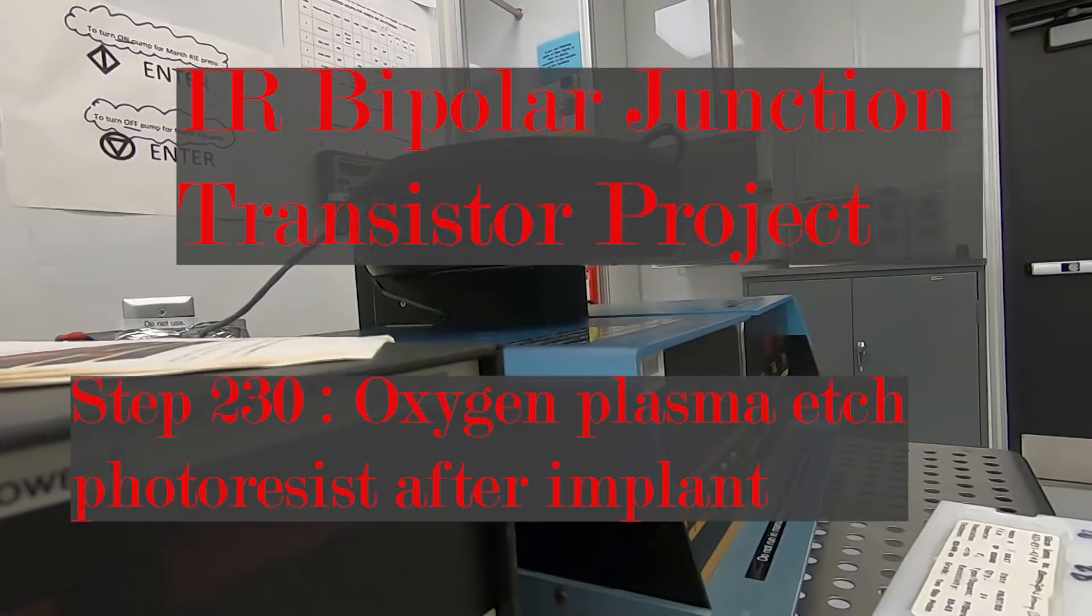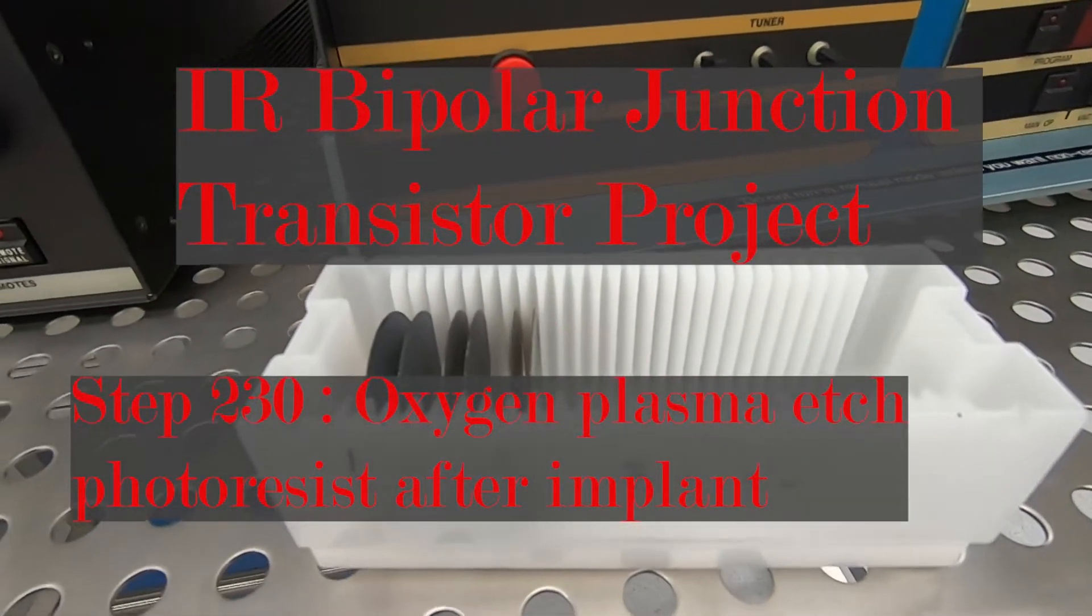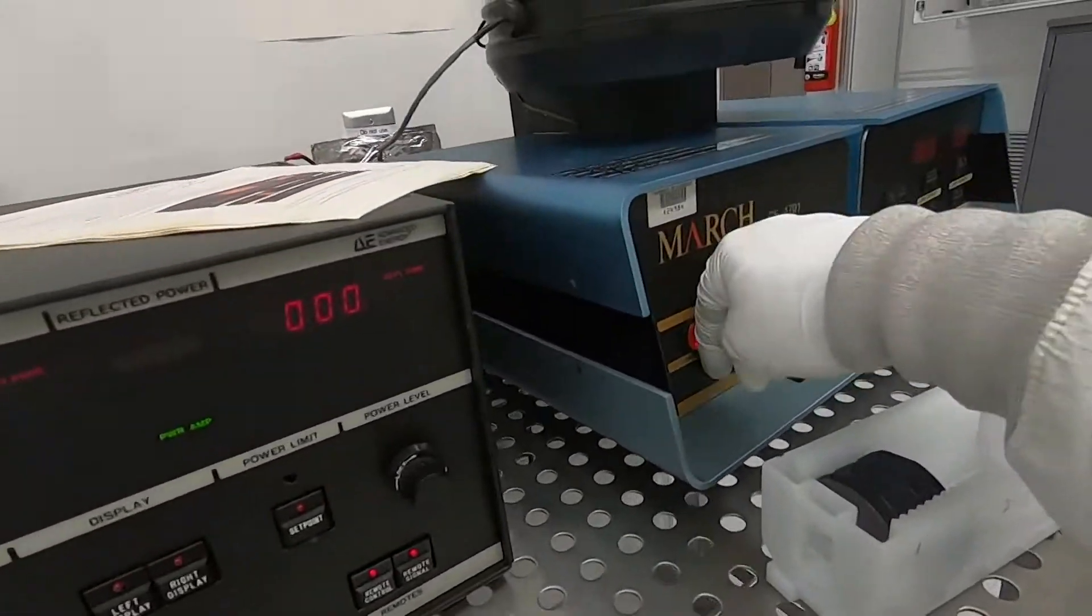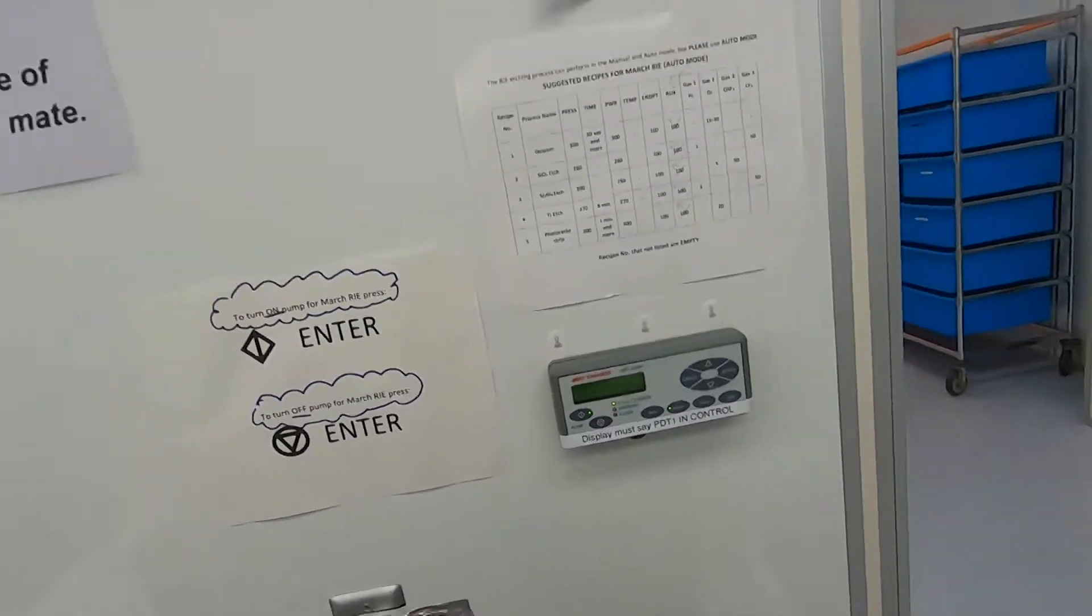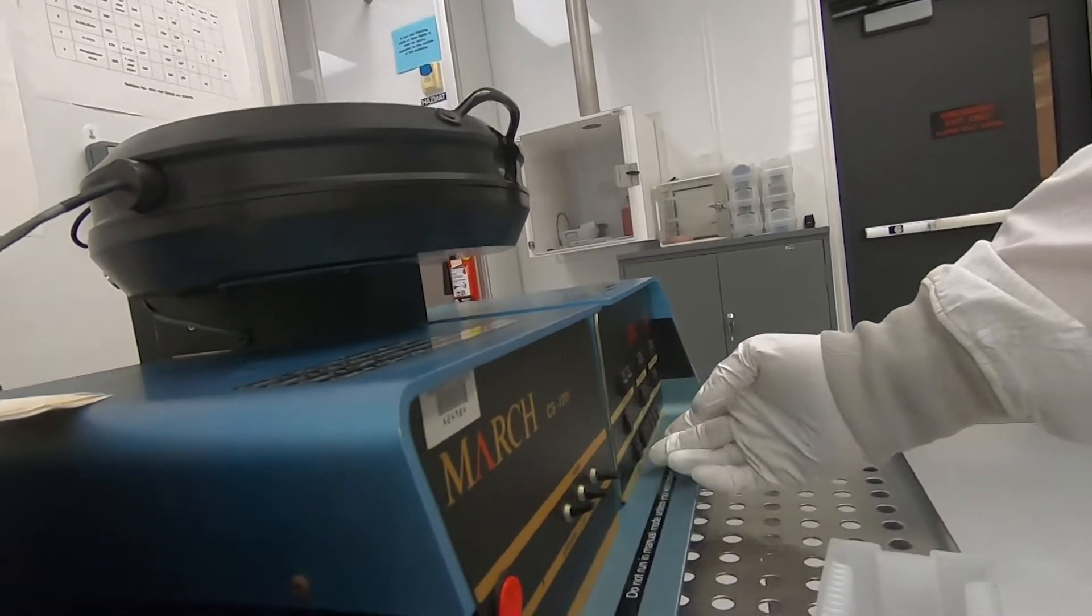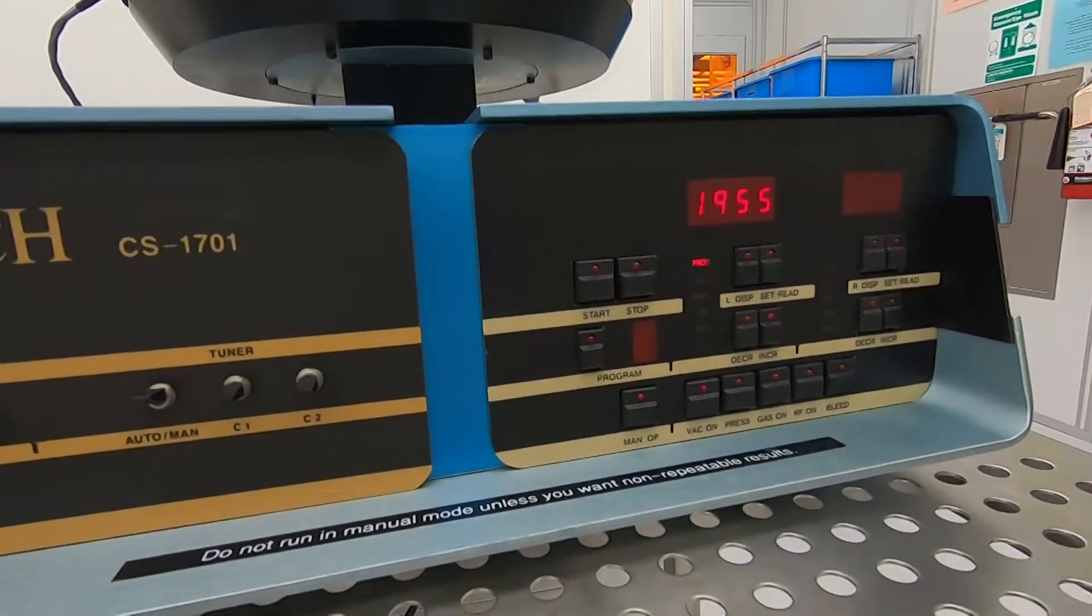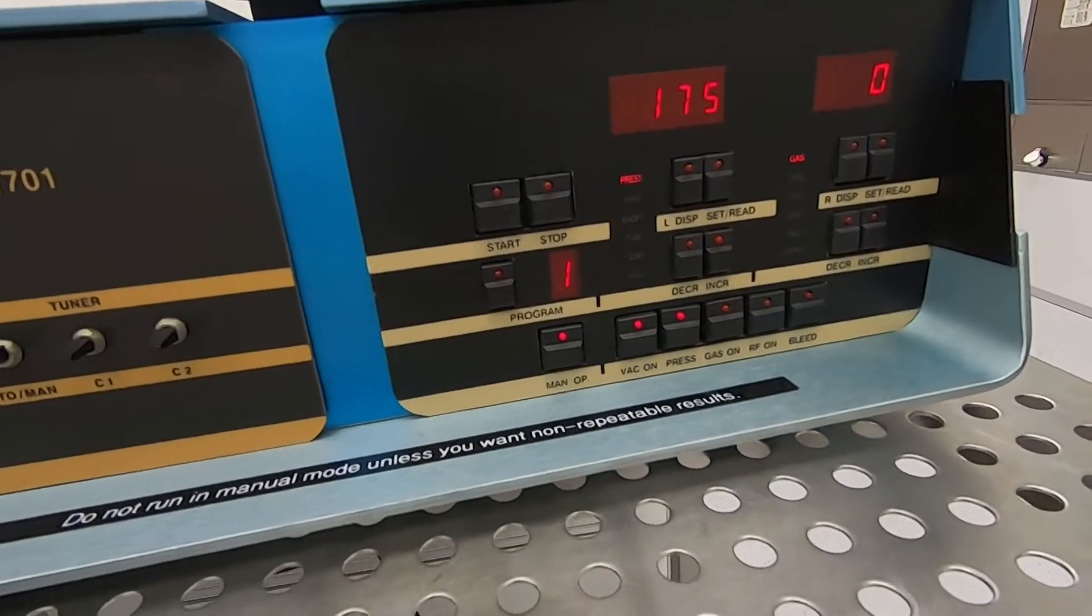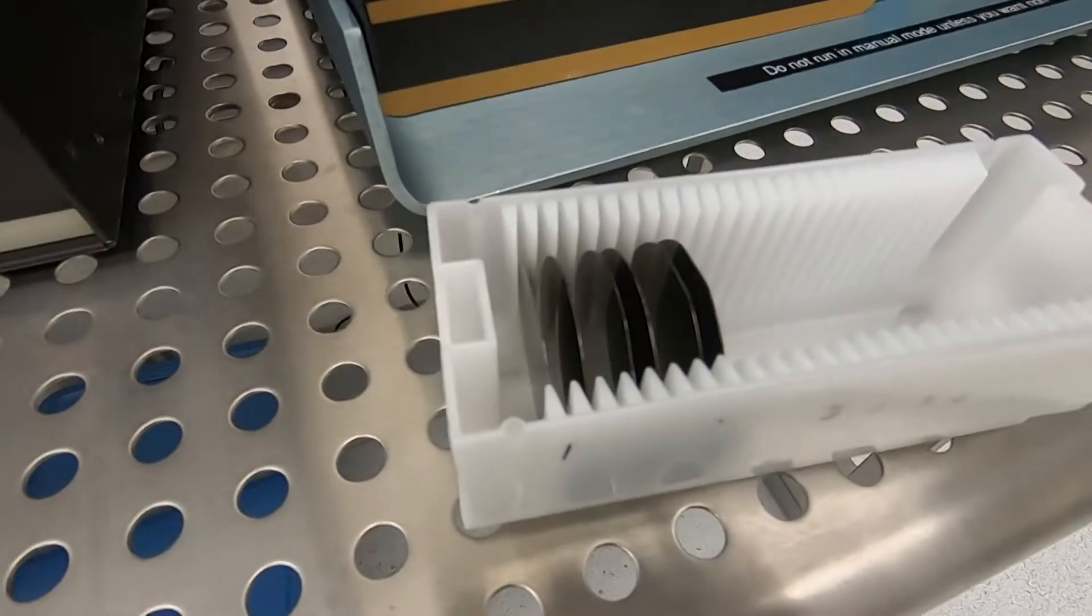Okay, here we are back at the RIE. Going to remove photoresist from these six wafers. I'm just going to go through this because we've seen this step like 50 times. Power on, power on. Manual operation, bleed. So it pumps down to some base pressure, then brings it up to atmosphere. Not very interested. I'm going to do all six of these wafers at once.